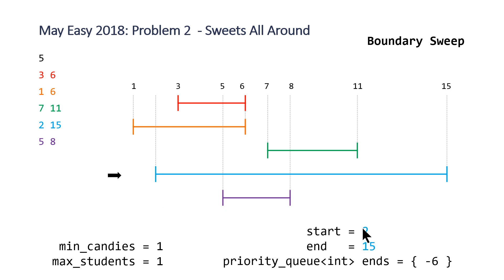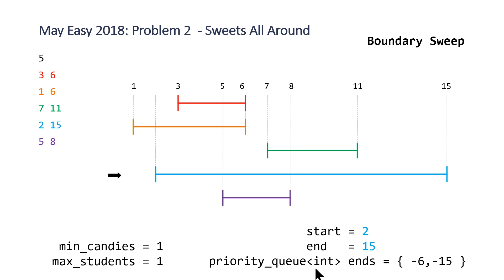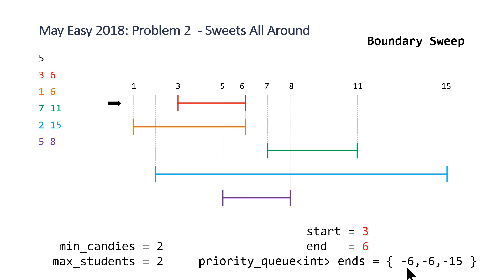With two candies the teacher satisfies the orange and blue students. Moving to the red student with range 3 to 6, we push 6 into the priority queue. The top value is not less than start, so we skip step two. The size of our priority queue is now 3, which is greater than our max students of 2, so we reset max students to 3 and min candies to 3.